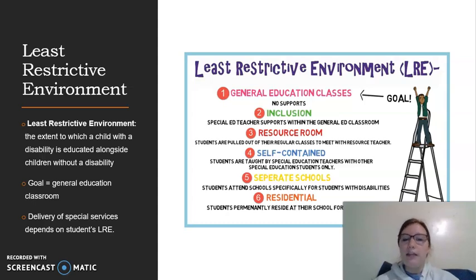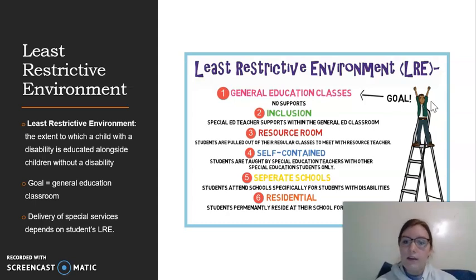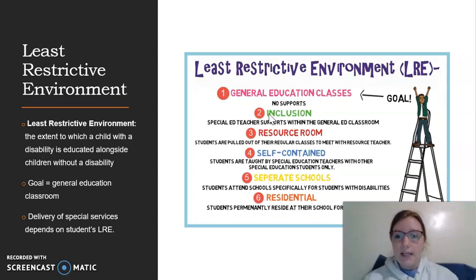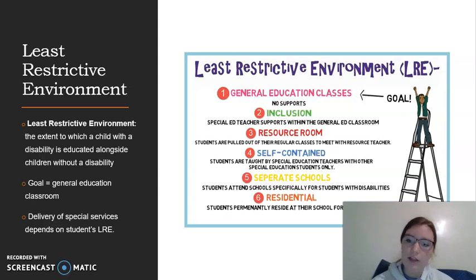The LRE is how often a student with a disability is going to be in the general education classroom. The goal is to have those students with disabilities in the general education classroom learning alongside children without disabilities. As our picture shows, the general education class is the goal. The second level is inclusion, where there is a special ed teacher or a para to support the student within the general education classroom, so that student with a disability is still included.